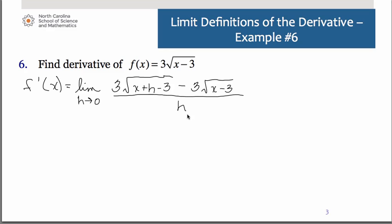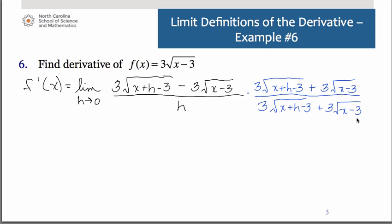minus f of x all over h. So we obviously cannot substitute 0 in for that denominator. So this is one that you hopefully recall. We will have to multiply by the conjugate of that numerator expression in order to get this simplified.